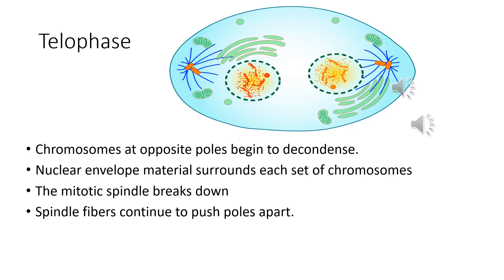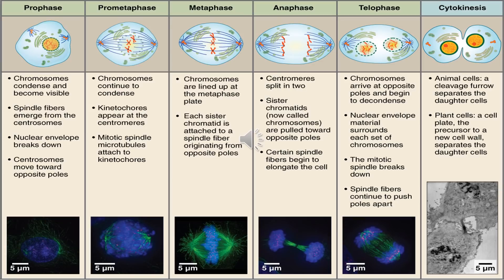To summarize the different stages of mitosis: in prophase, chromosomes condense and become visible, the nuclear envelope breaks down, and centrosomes move towards opposite poles. In prometaphase, chromosomes continue to condense and kinetochores appear at the centromeres. In metaphase, chromosomes are lined up at the metaphase plate. In anaphase, centromeres split into two and the sister chromatids — now called chromosomes — are pulled apart toward opposite poles. In telophase, nuclear envelope material surrounds each set of chromosomes, chromosomes arrive at opposite poles and begin to decondense, and spindle fibers continue to push the poles apart.